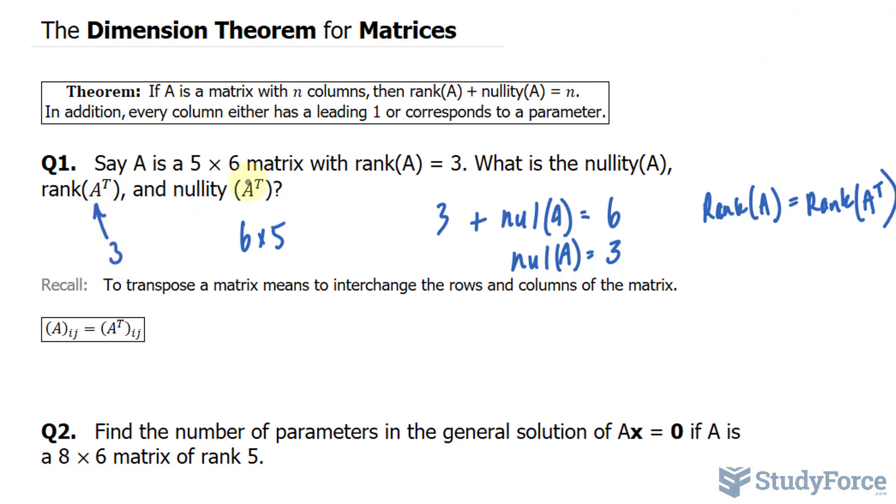Now to find the nullity, we can go back to this formula. We already know the rank of the transpose is 3, plus the nullity of the transpose is equal to, this time, 5. Remember that's our new column. If we rearrange, we should end up with the nullity of A transpose is equal to 5 minus 3, which is 2.